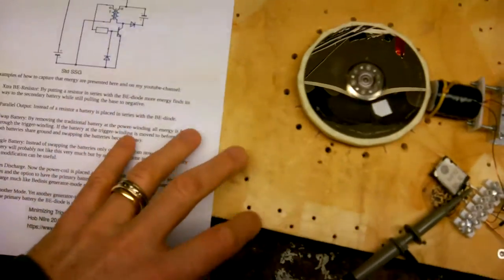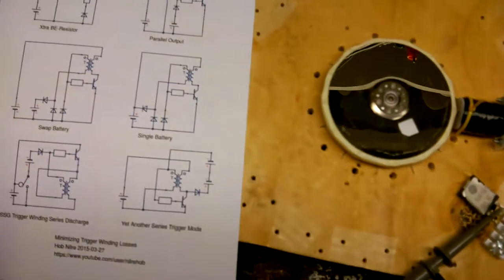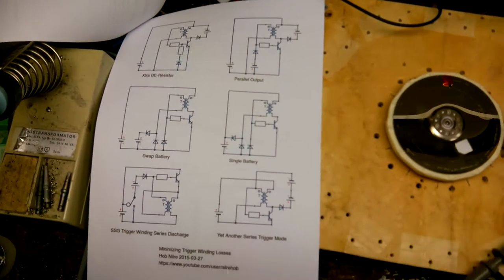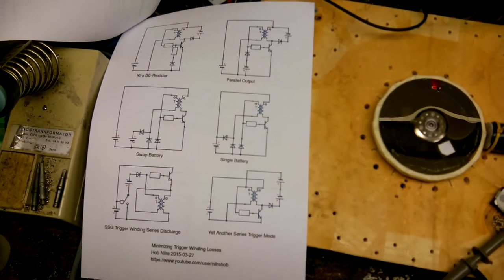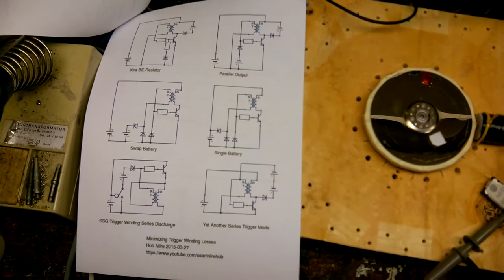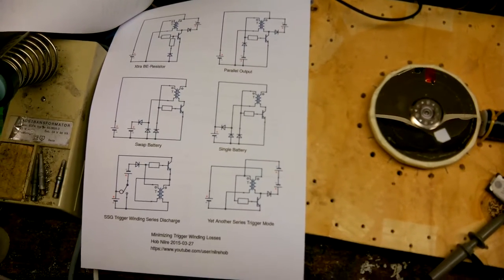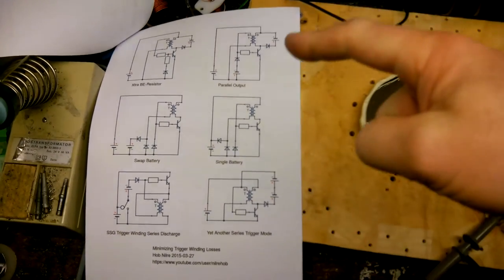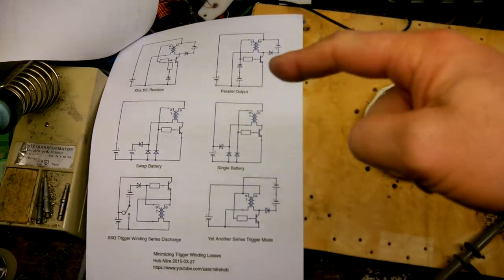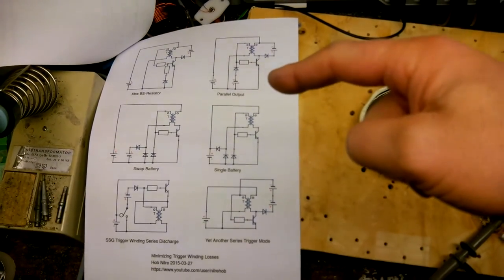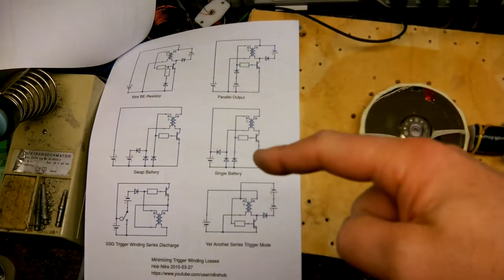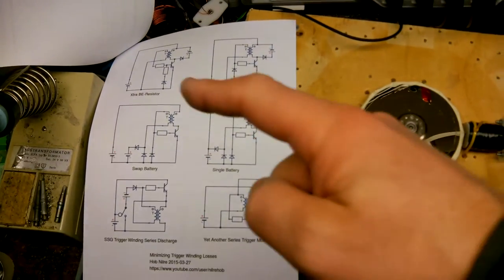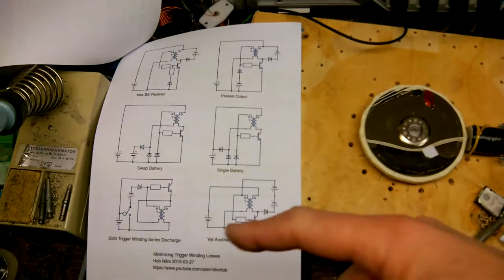This time I'm going to measure the COP of the circuits, excluding these two circuits because this one has three batteries and this one has only one battery. So I'm focusing on these that have batteries in two places.